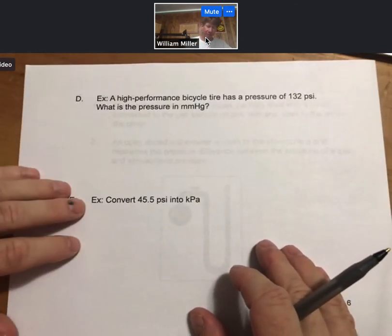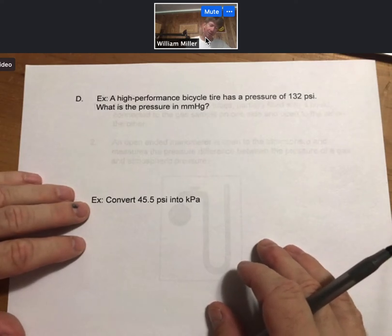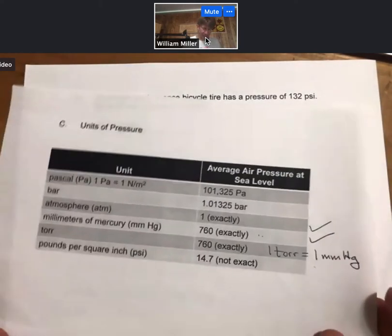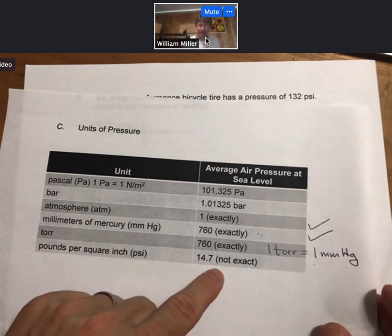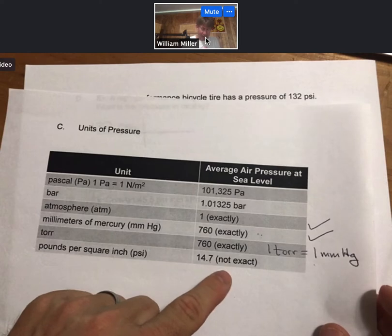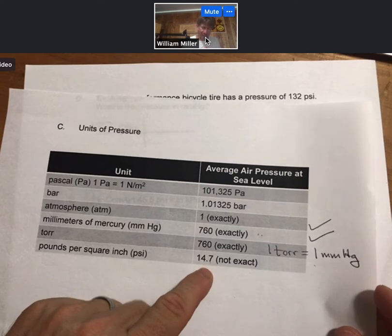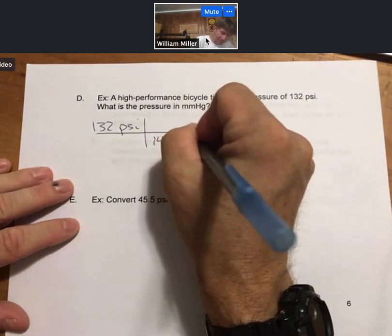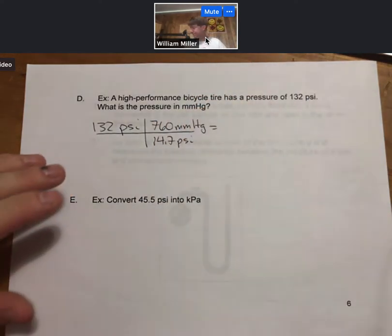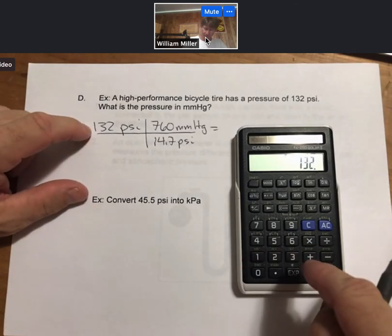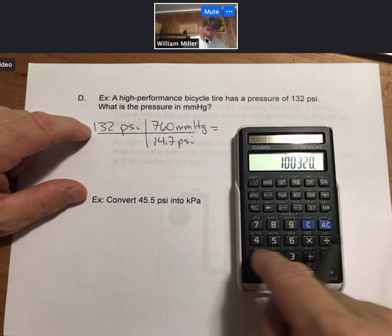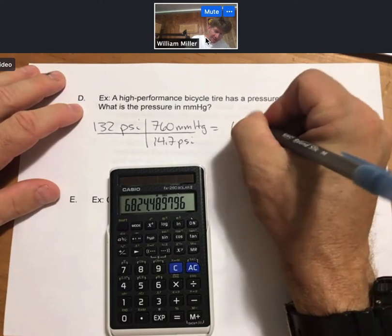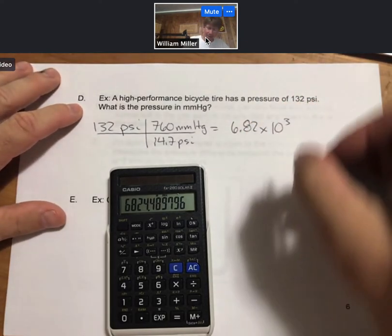As an example, a high-performance bicycle tire has a pressure of 132 PSI. What is the pressure in millimeters of mercury? So we go back to that last slide. We see that 14.7 pounds per square inch, and that is not exact. You can see it's got a decimal place in it. That is not exact, but the three sig figs were okay. 14.7 PSI is equal to 760 millimeters of mercury. 132 times 760 divided by 14.7, I get 6,824. I'm going to put that in scientific notation. 6.82 times 10 to the third millimeters of mercury.